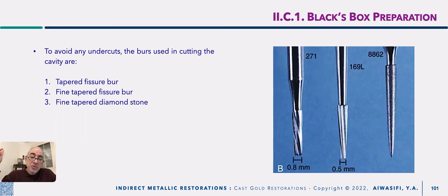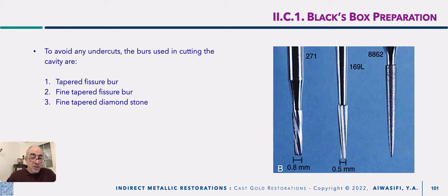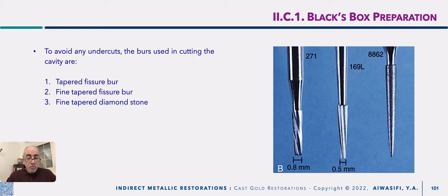A preparation should have a definite path of insertion where in this direction there should not be any undercuts, to allow easy insertion and removal of your wax pattern. For your relay, we should use the following burs: tapered fissure bur, fine tapered fissure bur, fine tapered diamond stone, which have a divergency of five to eight degrees, which is the required divergency we need.